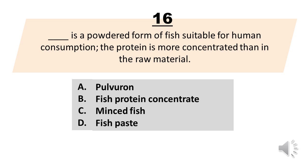Blank is a powdered form of fish suitable for human consumption. The protein is more concentrated than in the raw material. A. Pulvoron. B. Fish protein concentrate. C. Minced fish. D. Fish paste.